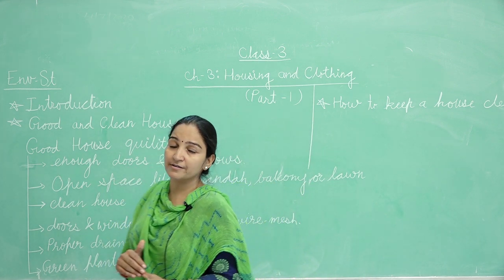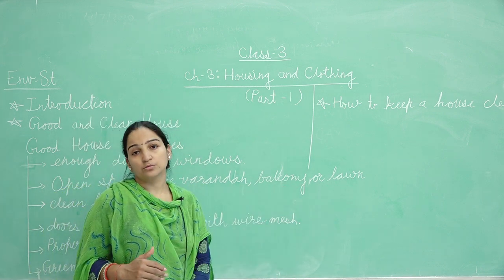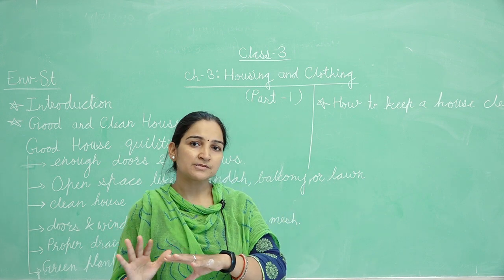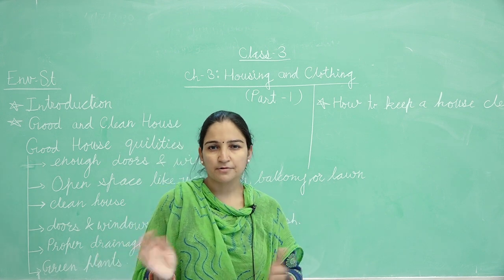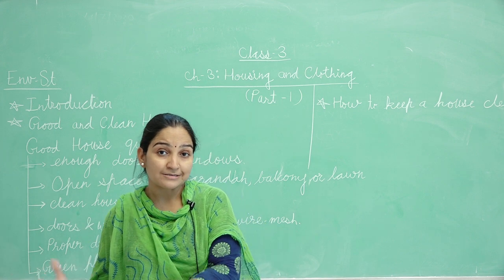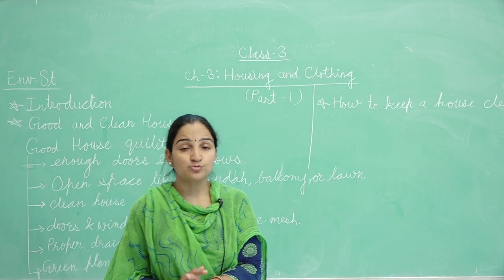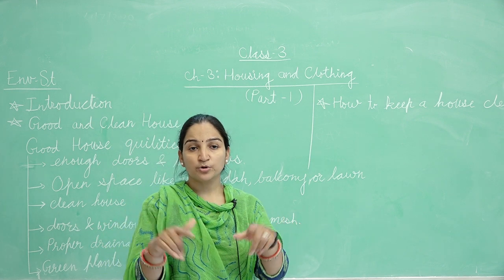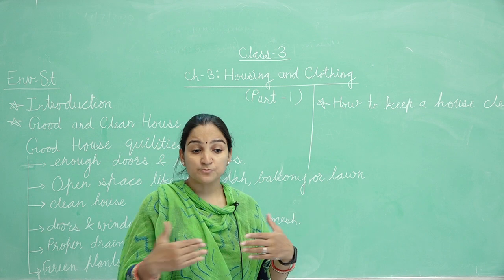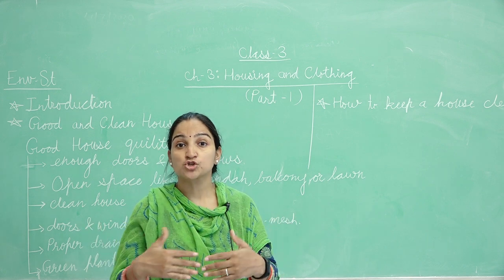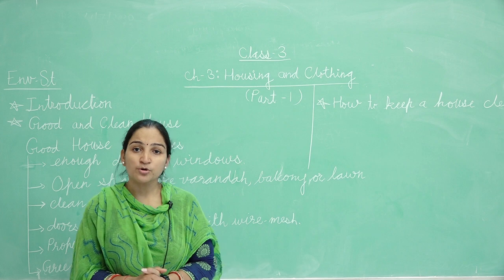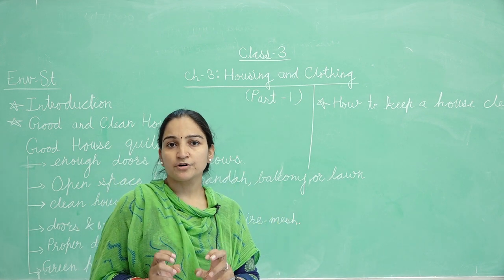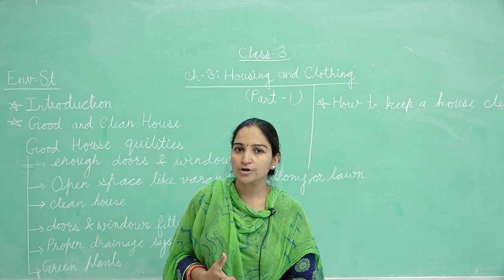Now, open space like a veranda, balcony, or lawn. Agar hum koi ghar bana rahe hain, toh agar flat hai toh choti si balcony hogi. Agar tenement hai toh lawn ya garden bhi bana sakte hain, ya veranda. Thode se gaon waale area mein ek aawri type ya veranda type thoda sa open space milega. This open space is a necessary quality of a good house.